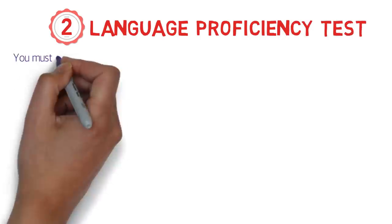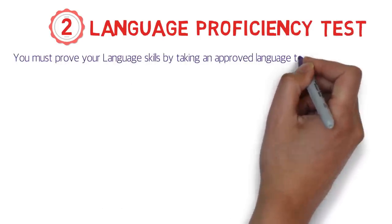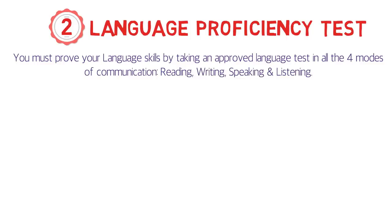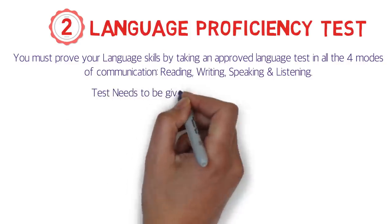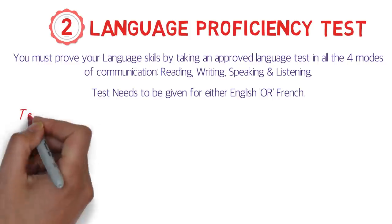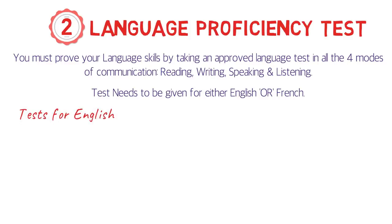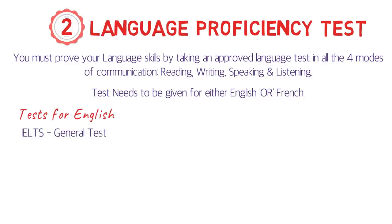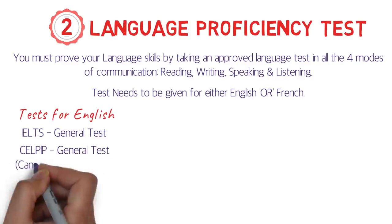Step two is the language proficiency test. You must prove your language skills by taking an approved test in all four modes: reading, writing, speaking, and listening. The test can be taken in English or French. For English, the options are IELTS General and CELPIP General. CELPIP is conducted in Canada, India (Chandigarh only), UAE, USA, and Philippines.